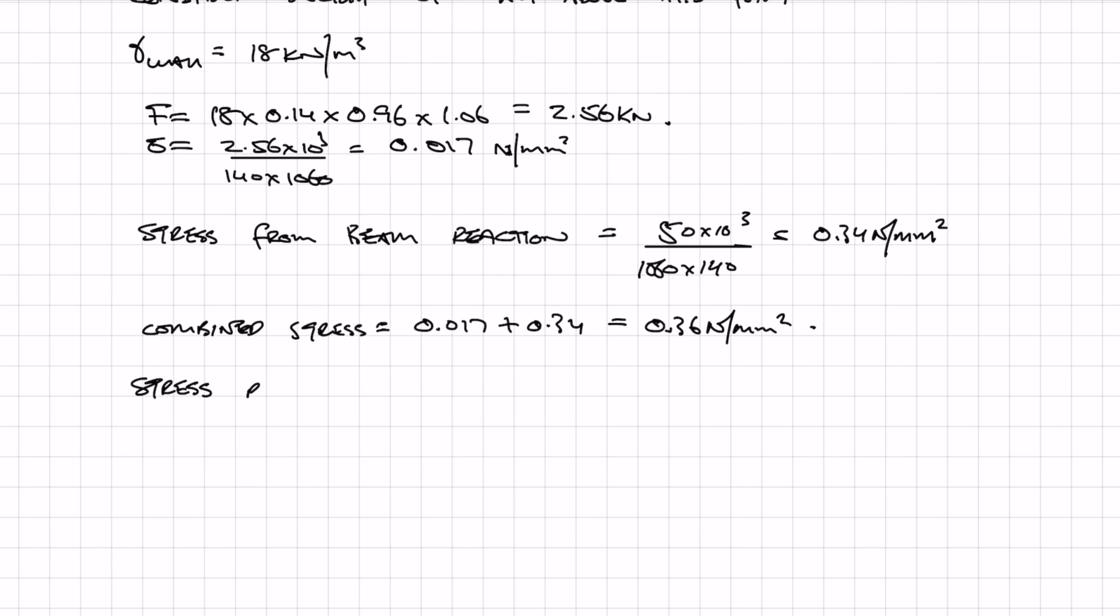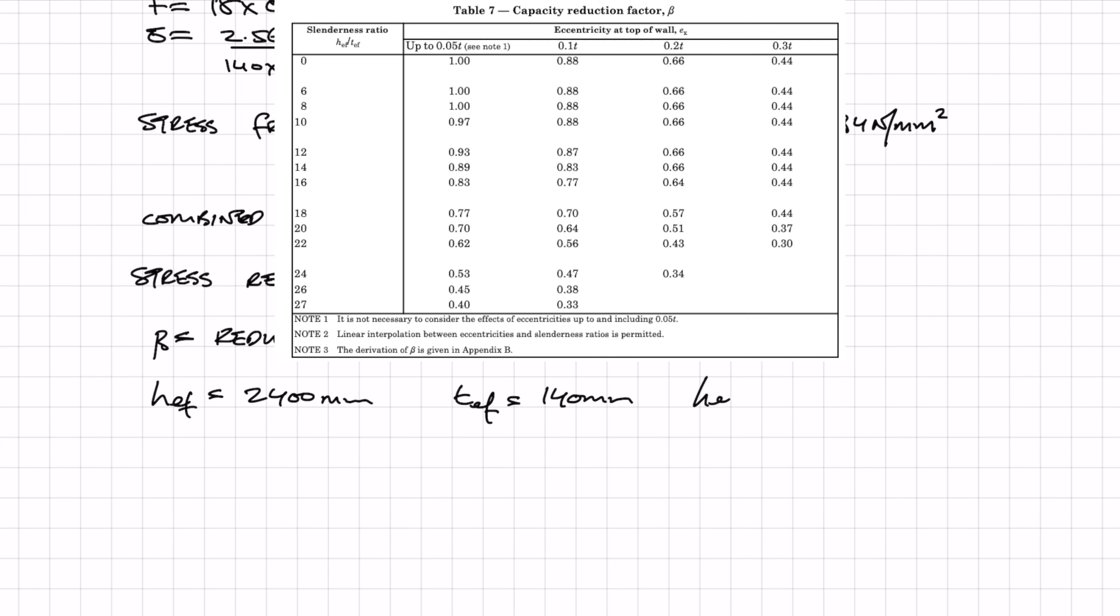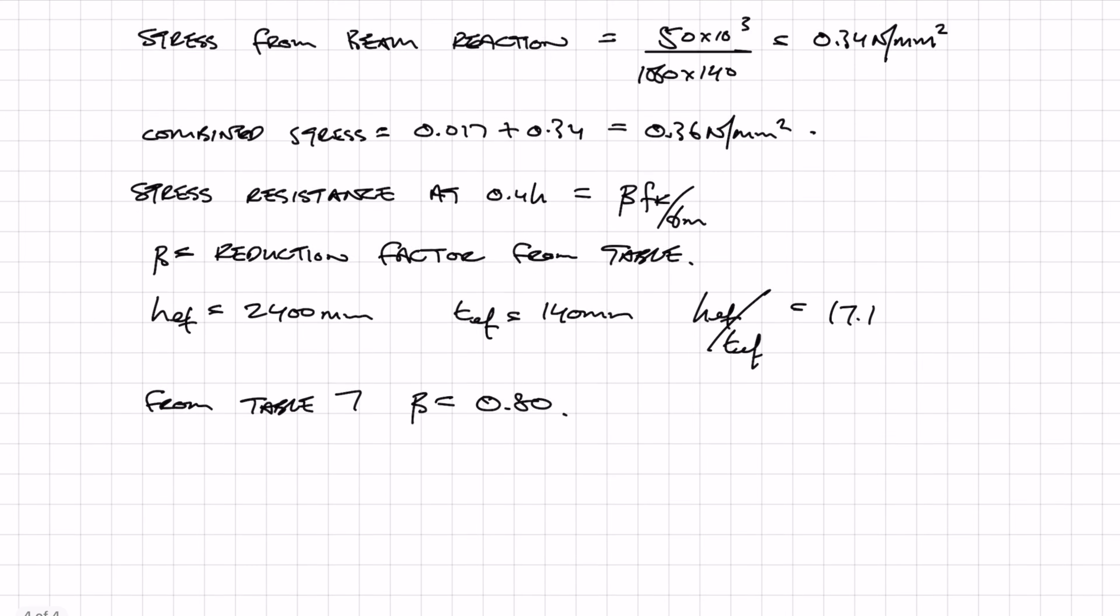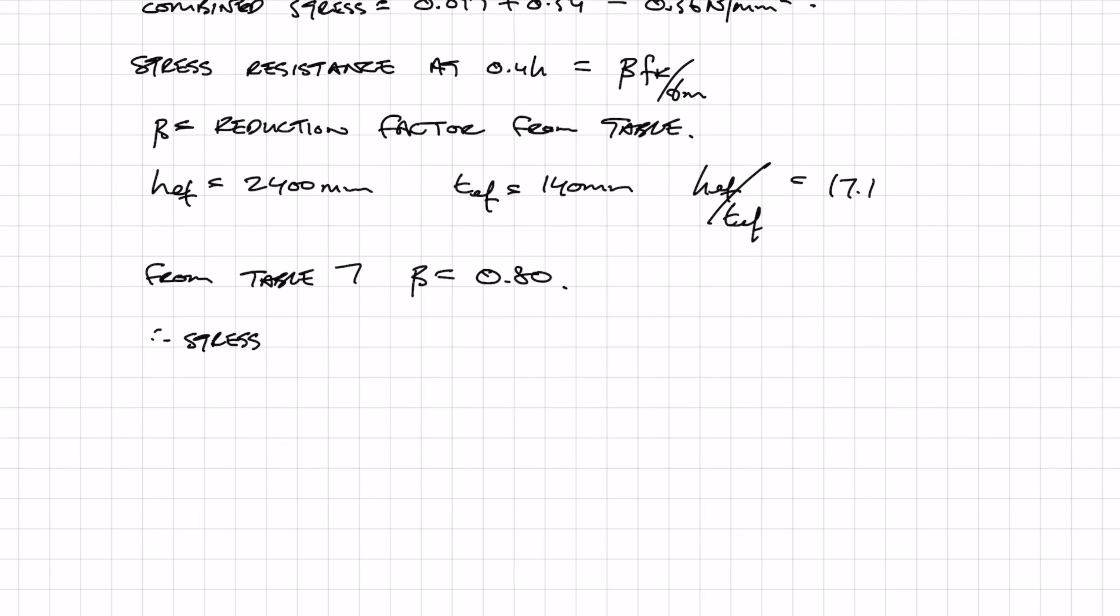The stress resistance is calculated by multiplying beta by fk over material safety factor. Beta is a reduction factor, and it's based on the ratio of the effective height divided by the effective thickness. So all you need to do is work out that ratio, go to table 7 in the code, and then find your reduction factor. In our case, the reduction factor beta comes to 0.8. Then all we need to do is plug it into the formula for calculating the stress resistance, and we get a stress resistance of 1.46 newtons per millimeter squared, which is greater than the applied 0.36, therefore our design is fine.